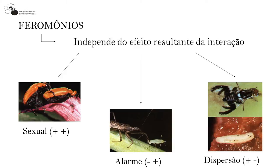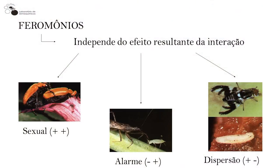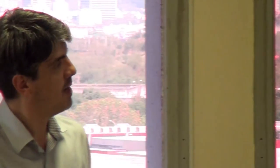Diferentemente dos aleloquímicos, os feromônios independem do efeito resultante da interação — são sempre chamados de feromônios. No feromônio sexual ambas as espécies são beneficiadas pelo acasalamento. Existe ainda o feromônio de alarme: nessa foto premiada, um afídeo está emitindo uma gotícula de feromônio de alarme, avisando os demais indivíduos da sua espécie sobre a presença de um predador. O afídeo não é beneficiado — vai ser devorado — mas os outros indivíduos que recebem o sinal escapam do perigo.